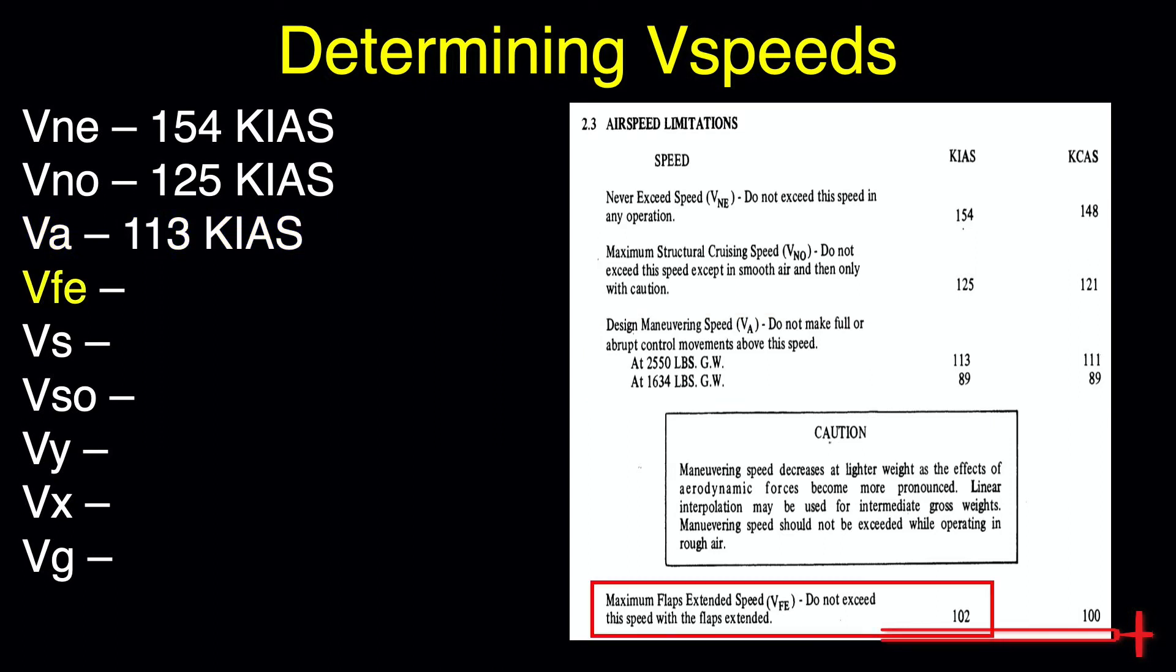Our never exceed speed is 154 knots indicated. Our maximum normal operating speed is 125 knots. Our maneuvering speed is dependent on weight. It requires more speed to disturb a heavier aircraft's state of flight. Let's assume we plan to fly around near max weight. We expect a maneuvering speed of about 113 knots. Above this speed, full deflection of control surfaces may overstress the aircraft. The maximum flap extended speed and maximum flaps operation speed are both 102 knots.